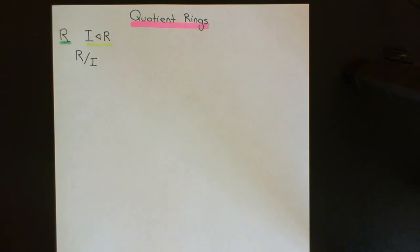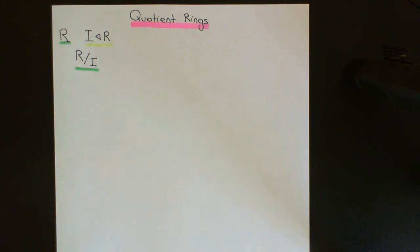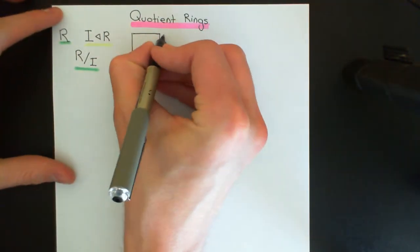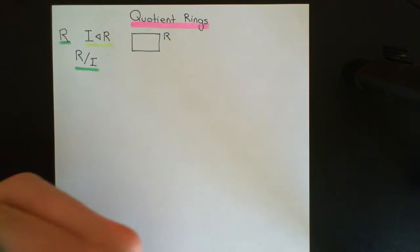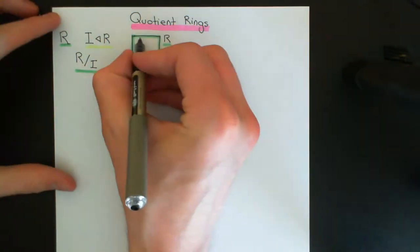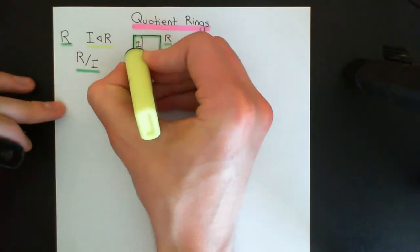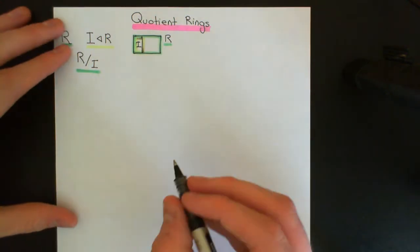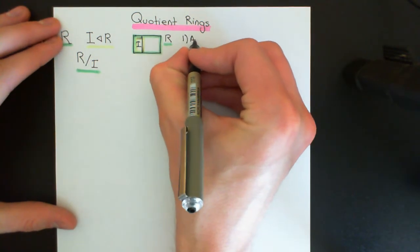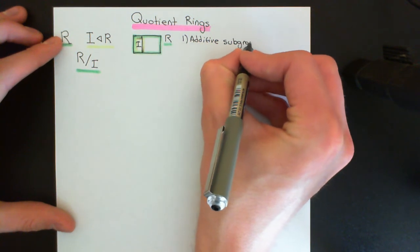Let me remind you of what an ideal is. An ideal is a subset of the ring which obeys two criteria. The first is that it is an additive subgroup of the ring. If I draw a picture: here is our commutative ring R coloured in green, and here is the ideal, just shown as a subset. It must obey two properties. Property number one is that it's an additive subgroup. The ring has two operations — addition and multiplication.